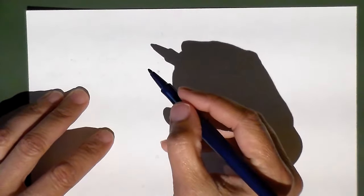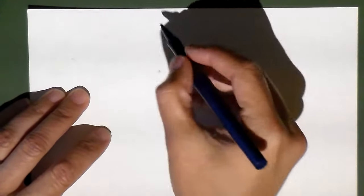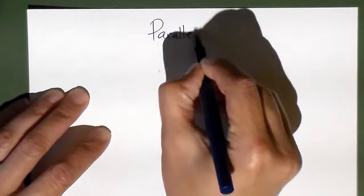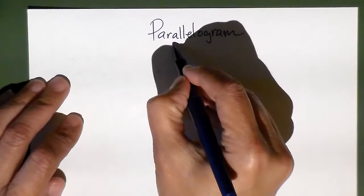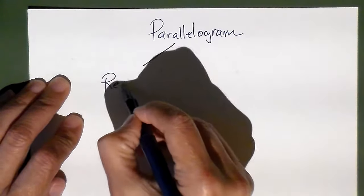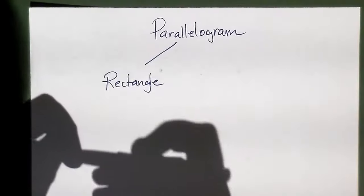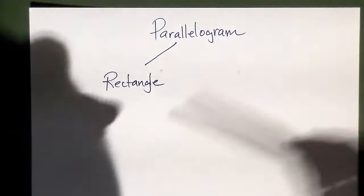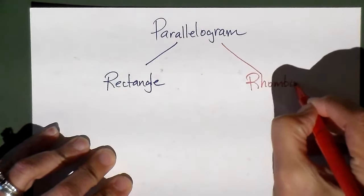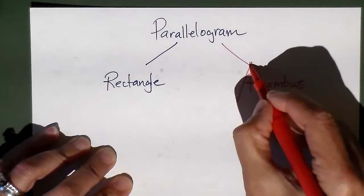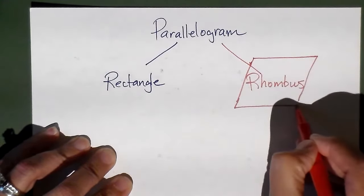Let's look at some special properties here. We have a couple of special quads besides parallelograms. The first one we're going to look at is a rectangle. From parallelogram we can have two different offshoots: we can have a rectangle and the rhombus. So we have the rectangle and we have the rhombus — those are the two.